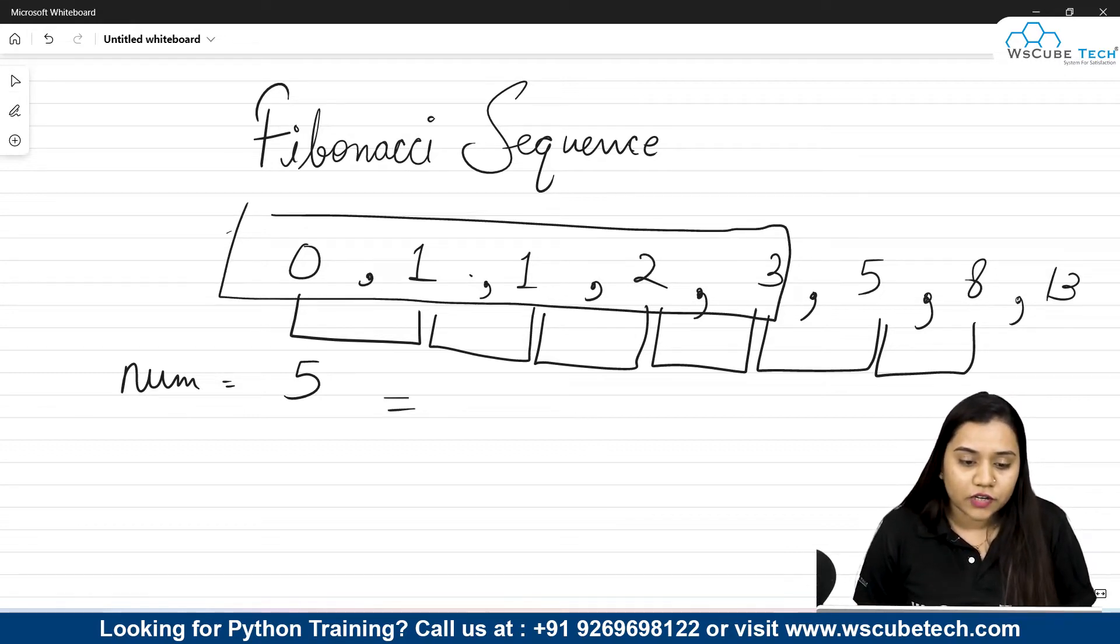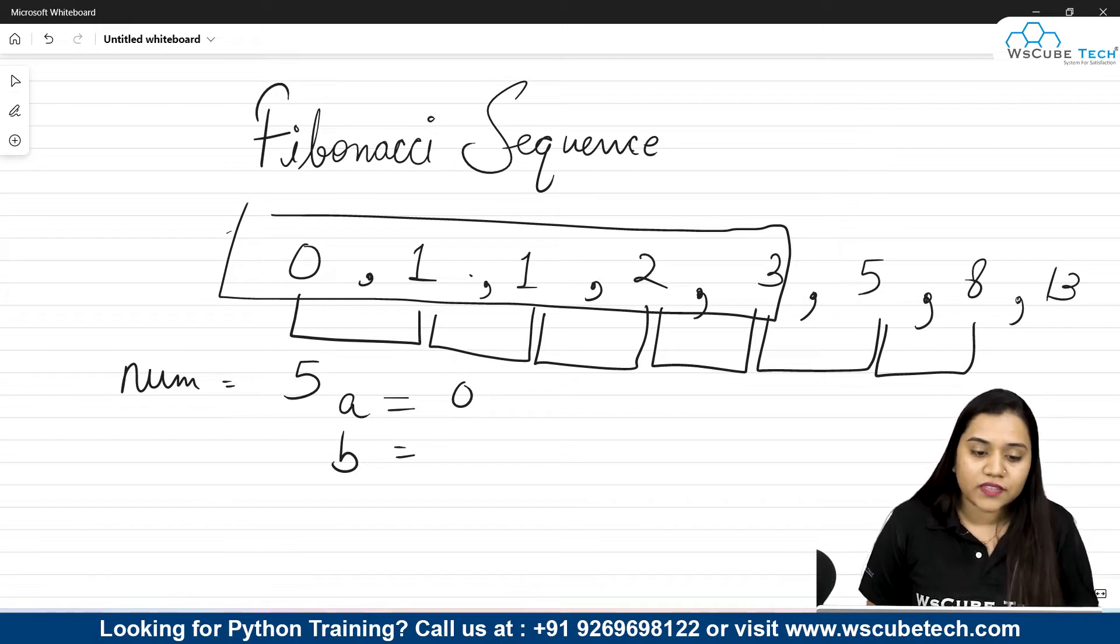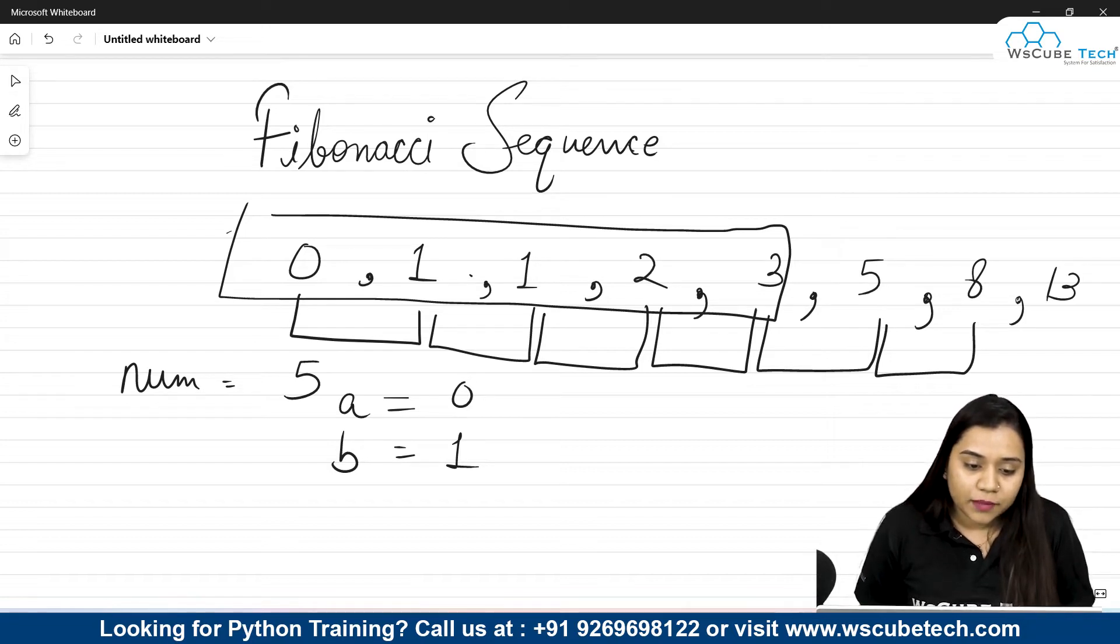For this what we need to do? We need to write first of all the first values. Let's say I am considering three variables over here: A, B and C. So A will always be 0, the sequence will always start from 0 and the second element will always be 1. This is the condition of a Fibonacci sequence that first element is 0, second element is 1. Now C, the third element will be the addition of A plus B.